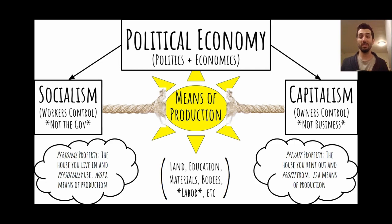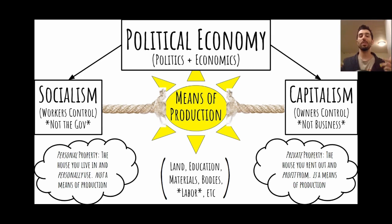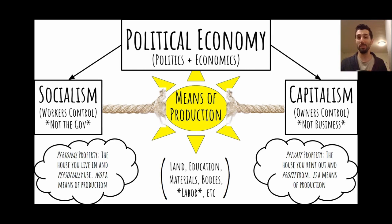The really important takeaway is that there is no transcending the tension between socialism and capitalism, because there are going to be means of production. Things are going to be produced, services are going to be rendered, and someone is going to be in control of those means of production — either workers or owners. There's no way around that. We can choose to engage in it in an intentional way, or we can tell ourselves we're not engaging it, in which case we're just letting the status quo exist. Currently, the status quo is one of capitalism.